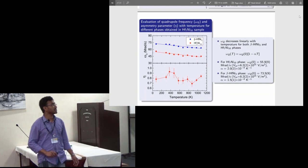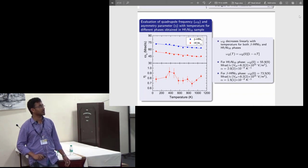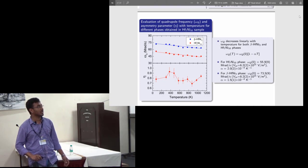This is the quadrupole frequency temperature dependence for these 2 phases. Here we found also similar linear temperature dependence for these 2 phases and alpha value for this Hf7Ni10 is 2×10^(-4) K^(-1).